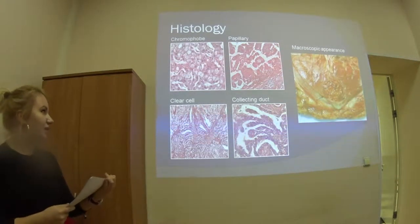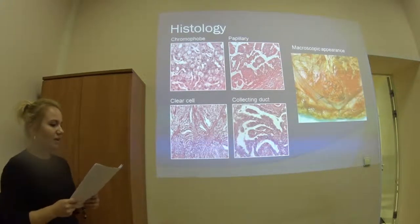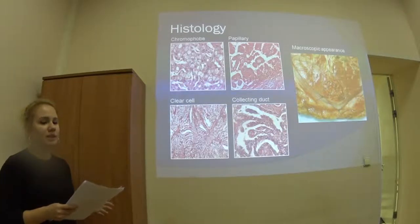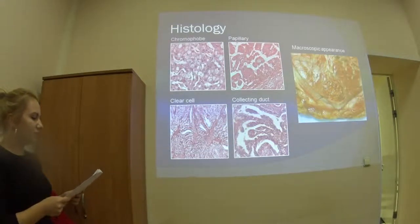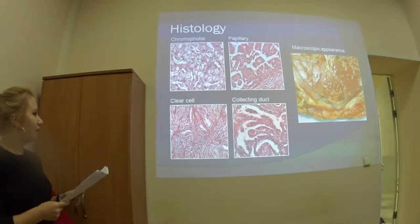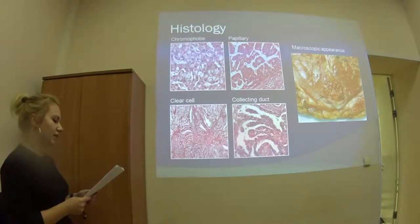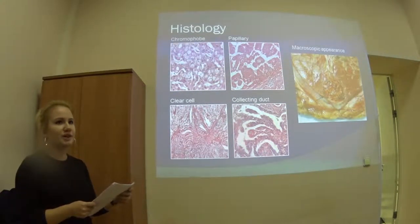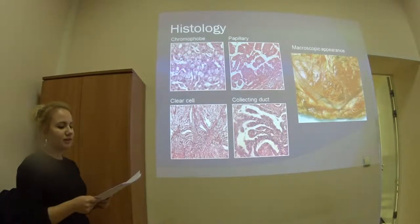Some words about histology. There are two main subtypes of renal cell carcinoma. Starting with clear cell carcinoma — it's the most common, taking about 70-80%, and it arises from proximal convoluted tubules. It has large uniform cells with clear cytoplasm and is really highly vascularized. The second type is papillary renal cell carcinoma, which takes about 13-20%, and it arises from distal convoluted tubules.